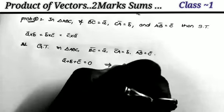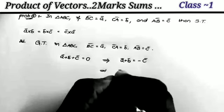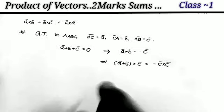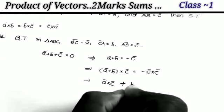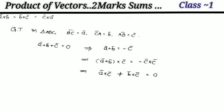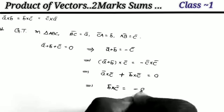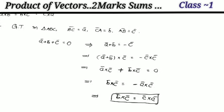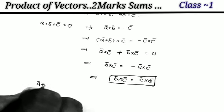In a triangle ABC, the sum of the three sides equals zero: a plus b plus c equals zero, so a plus b equals minus c. Applying cross c to this equation: (a plus b) cross c equals minus c cross c. Expanding: a cross c plus b cross c equals zero, since c cross c equals zero. This implies b cross c equals minus a cross c, which is c cross a.